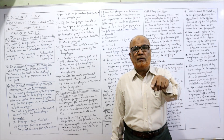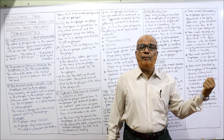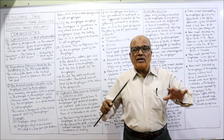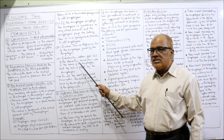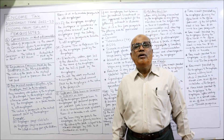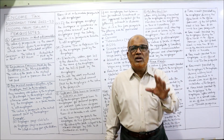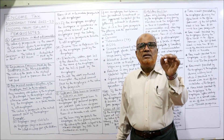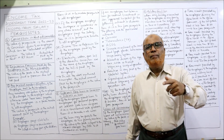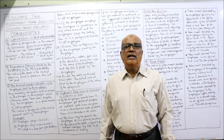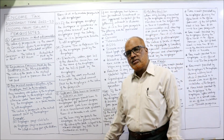Income tax or professional tax must be paid by the employee, but sometimes an agreement provides that the employer will pay them — making it a taxable perquisite. Also, if an electricity, water, or gas connection is in the name of the employee but the bill is paid by the employer, it is a fully taxable perquisite in the hands of all employees. In all these cases, the actual amount paid by the employer is the value of the perquisite.